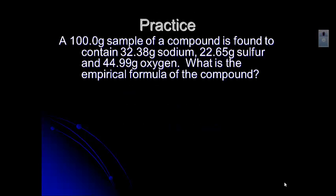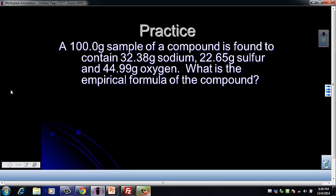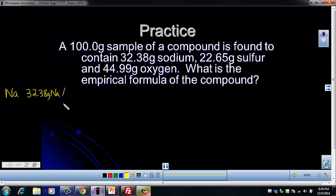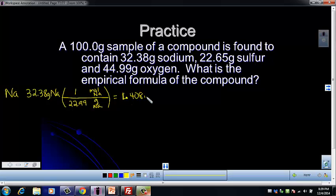Let's take a look at a practice problem. The problem is asking us to find the empirical formula, so we'll use our little rhyme. The first step says percent to mass — our problem already has masses in it, so we can skip that step. Our second step is mass to moles. Starting with sodium: we've got 32.38 grams of sodium. We set up a factor label with grams of sodium on the bottom and moles of sodium on top. One mole of sodium has a molar mass of 22.99 grams, giving us 1.408 moles of sodium.